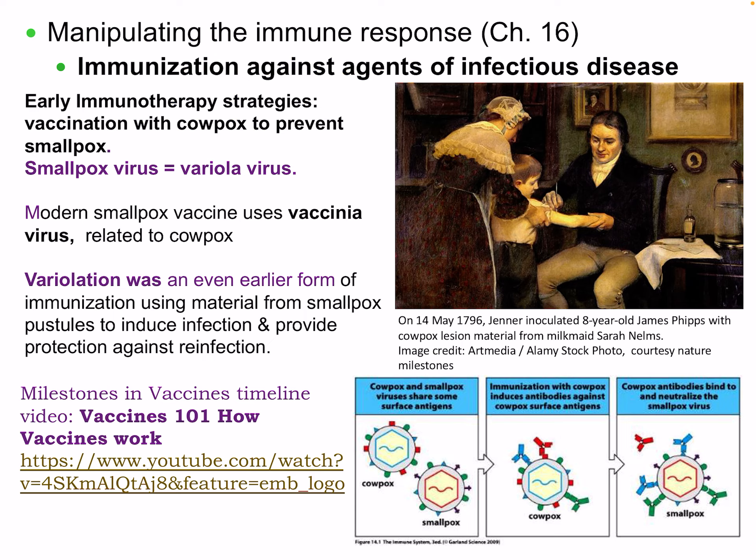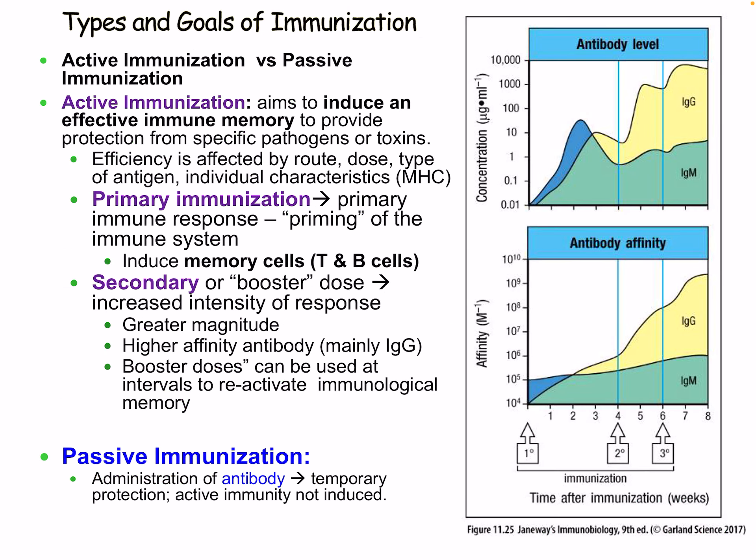Now we'll discuss immunization. Jenner inoculated an eight-year-old with cowpox lesion material from a milkmaid, giving immunity against smallpox. Early immunotherapy strategies included vaccination with cowpox to prevent smallpox — caused by the variola virus. The modern smallpox vaccine uses vaccinia virus, which is related to cowpox. Variolation was an even earlier form of immunization, using material from smallpox pustules to induce infection and provide protection against reinfection — our earliest example of vaccination or immunization.